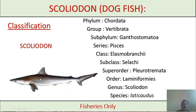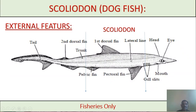The body of Scolidon is laterally compressed. The color of the fish is gray on the dorsal and lateral sides, and yellowish white from below. Due to the presence of placoid scales on the skin, the texture is rough. The placoid scales are pointed, giving the surface a rough feel.